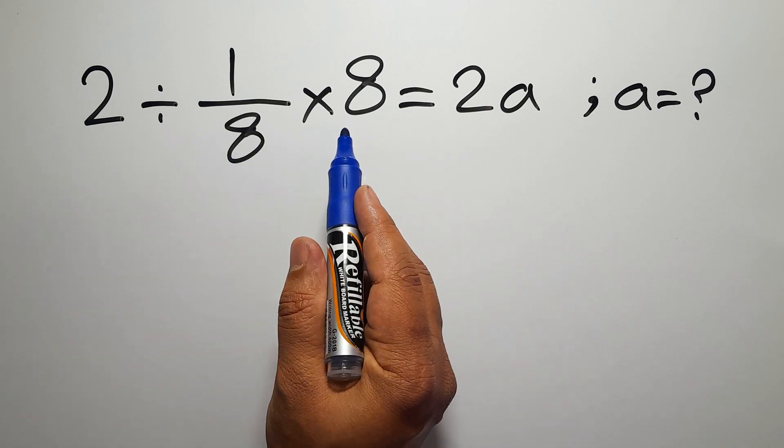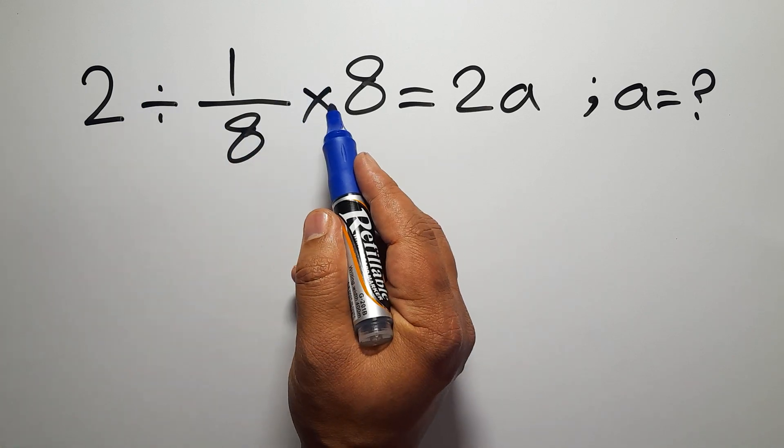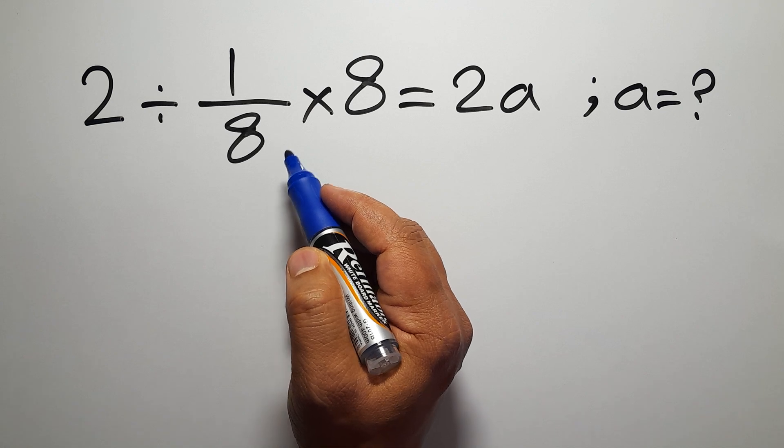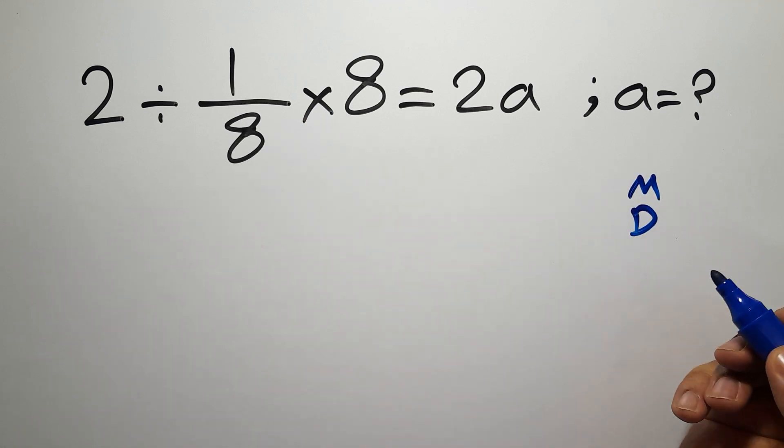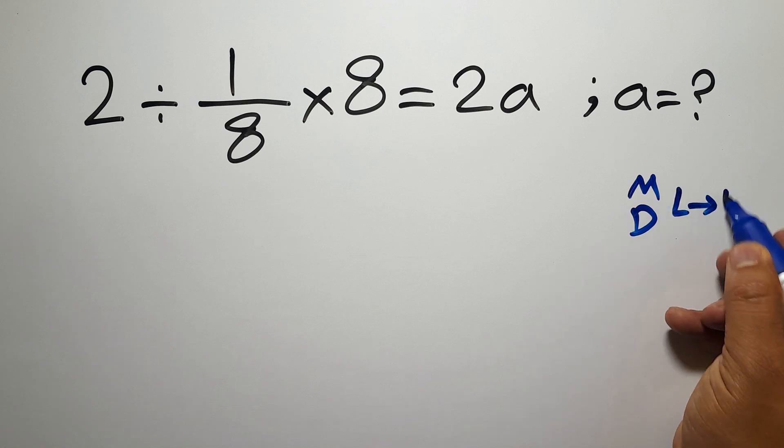On the left-hand side, we have one division and one multiplication. According to the order of operations, multiplication and division have equal priority, and we have to work from left to right.